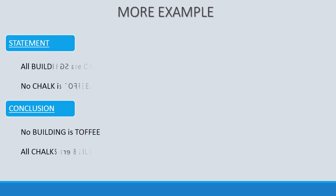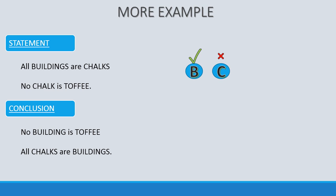Let's study another example where two statements and two probable conclusions are given; we have to find out if the conclusions are true or false. In syllogism problems, often illogical or unreal statements are given to make it complex and confusing, so never bother about the meaning — just identify the elements and write the symbol using the first letter or some code you prefer. Here three elements are present: building, chalk, and toffee. For 'All buildings are chalks', the symbol will be a tick over B and a cross over C.